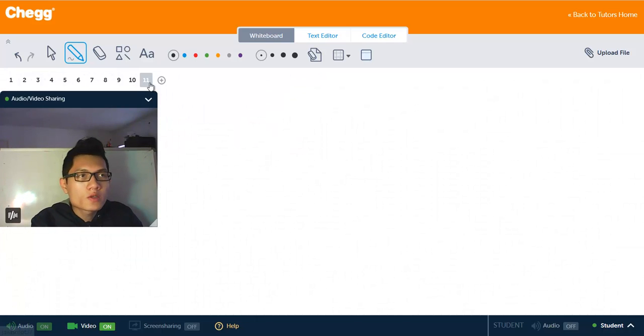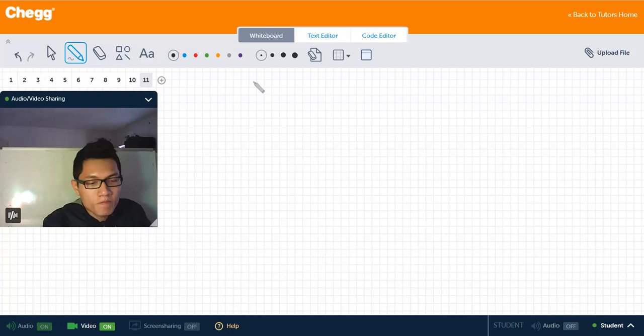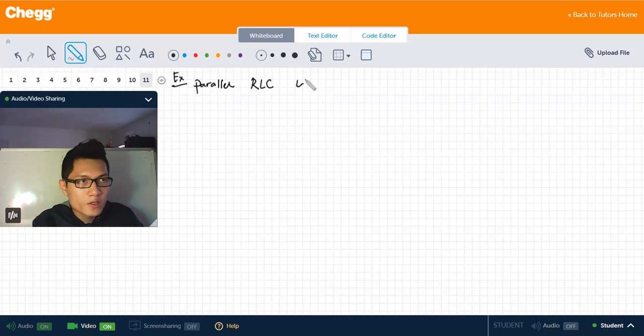Okay, so let's take a look at one example on how to find the admittance of a circuit. For example, we have the RLC circuit, a parallel RLC circuit.